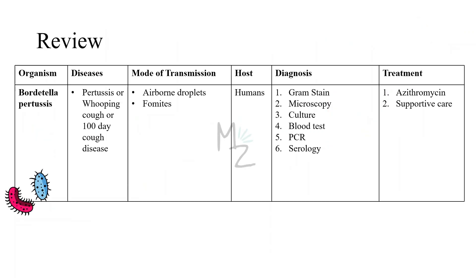Alright everybody, let's have a quick recap. The organism we discussed today is Bordetella Pertussis, responsible for causing pertussis — also called whooping cough or 100-day cough disease. It is transmitted via airborne droplets during coughing or sneezing and also via fomites. Hosts are only humans. Diagnosis is based on Gram staining, microscopy, culture, blood test, PCR, and serology. The drug of choice is azithromycin — a macrolide antibiotic — and we can also go for supportive care like oxygen therapy and suction of mucus. That's it for today's video. If you've got any suggestions, feel free to leave them in the comments. You can connect with me on Instagram and Twitter at handle medzocrof. Assalamualaikum.